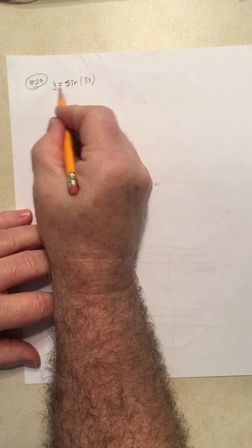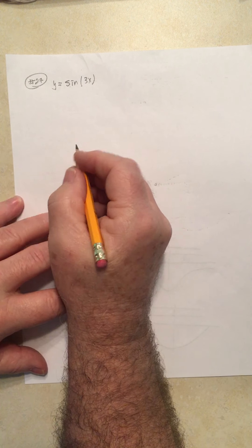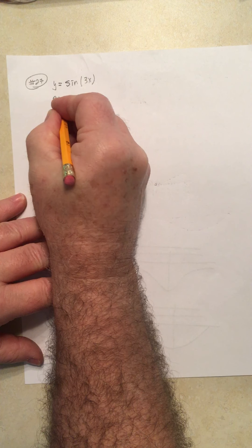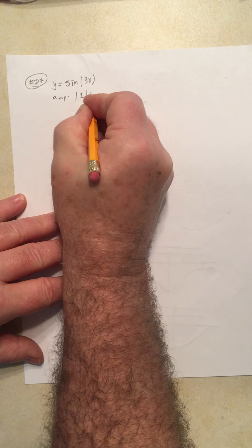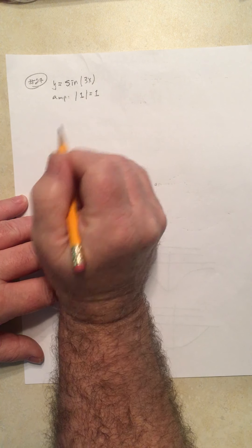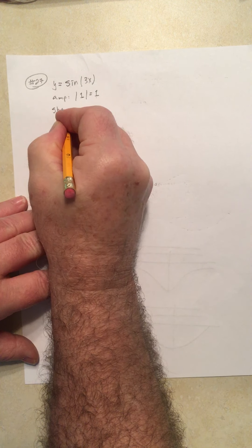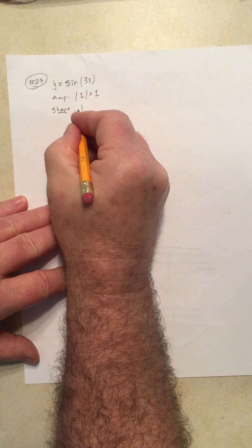Alright, so let's see if we can sketch y equals sine of 3x. Amplitude - always use absolute value - the amplitude is 1. The basic shape is the sine curve.